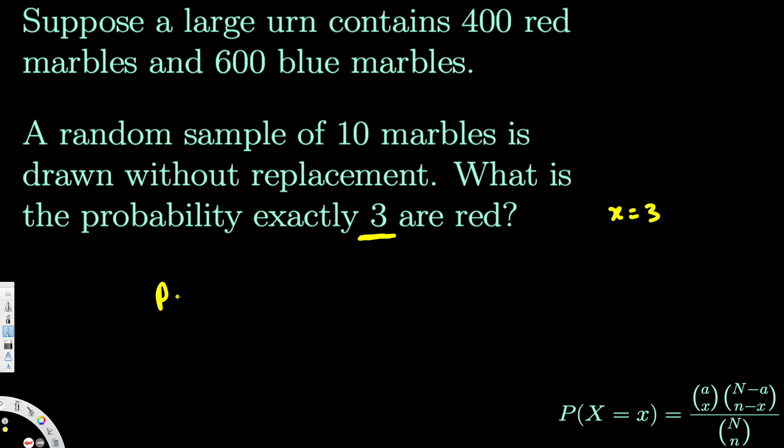So P of 3, x value is 3, and we are taking 3 so we have to have 3 from the total red. If you look at the red, total number of red is 400 and we want 3 to be red. So 400 choose 3.